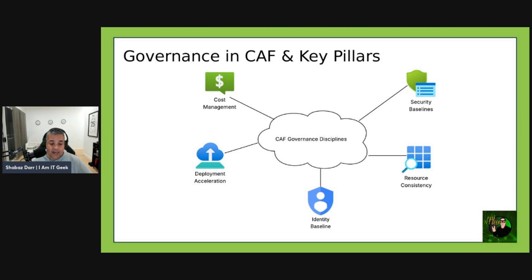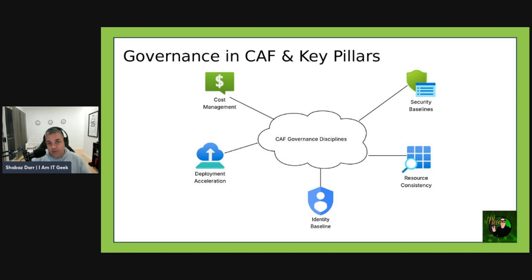The resource consistency pillar's goal is to ensure resources are deployed and configured consistently. Tools include Azure Blueprints — which we'll demo at the end of this episode — ARM templates, and Bicep, along with naming and tagging standards. An example is using blueprints to enforce naming conventions and tagging policies.